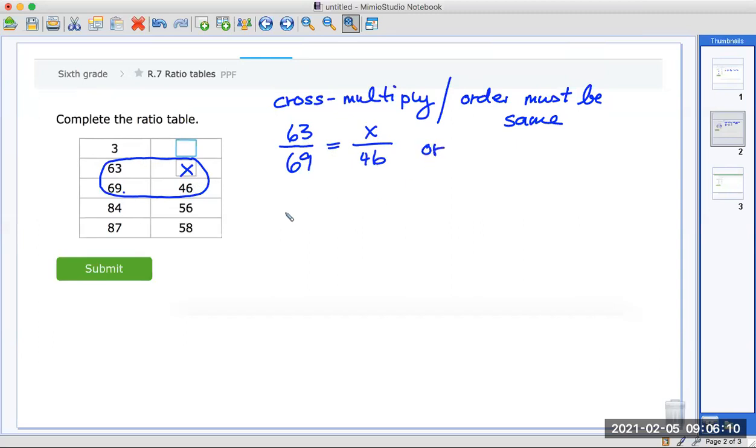You can also say, I'll give you another choice, 63 over x. And you started here, so I'm going down here is 69 over 46. However you do it, it has to be the same order. And I'll give you one more choice how to do it correctly. You can also say x over 46 is equal to, started here. So you're going here and put that on top. 63 over 69. Either of these will work.